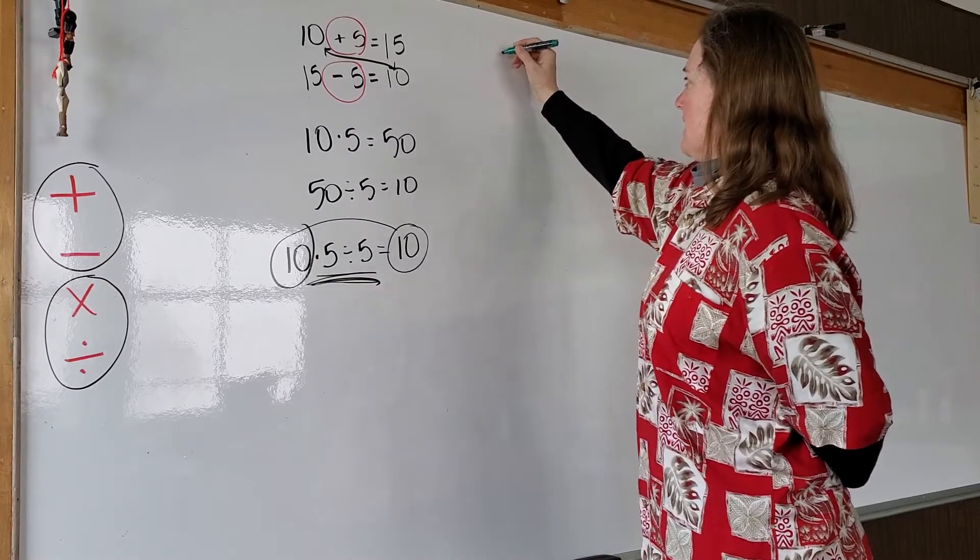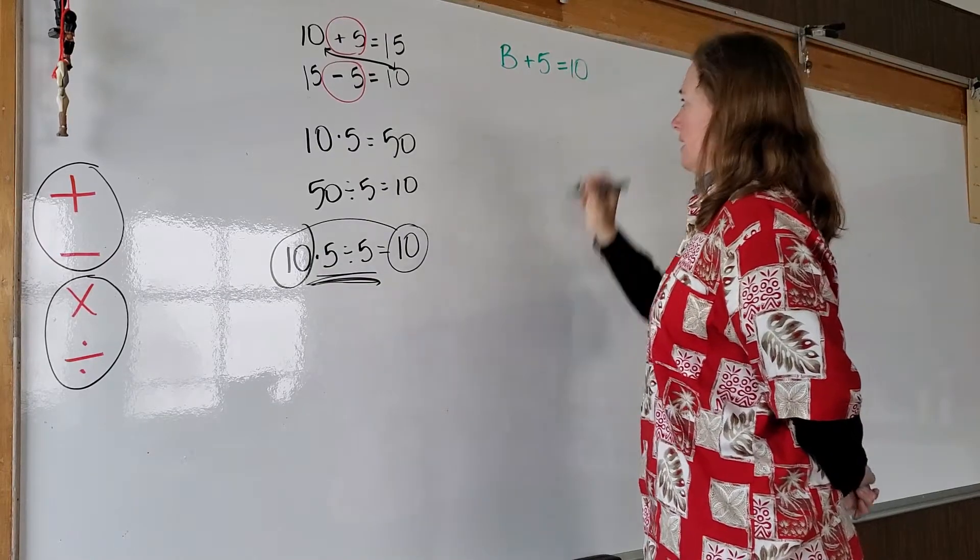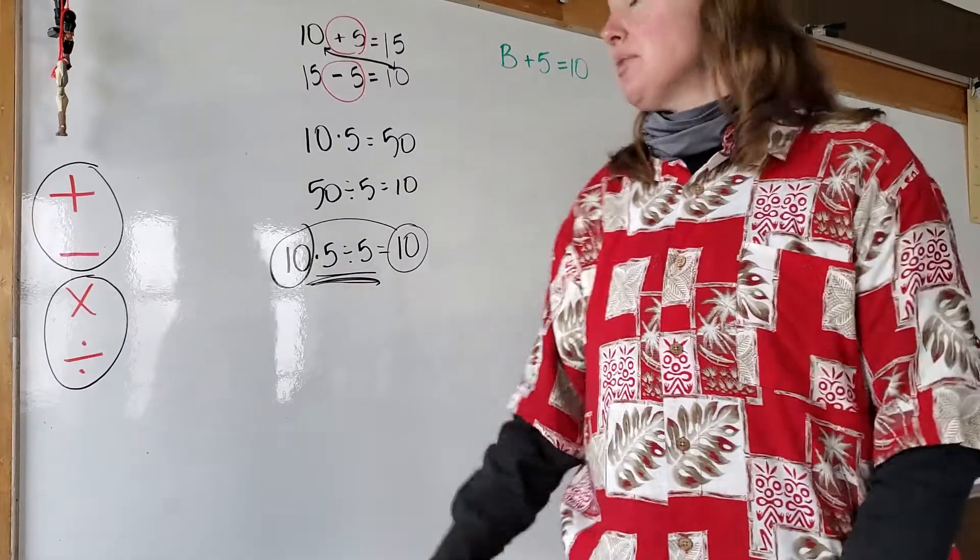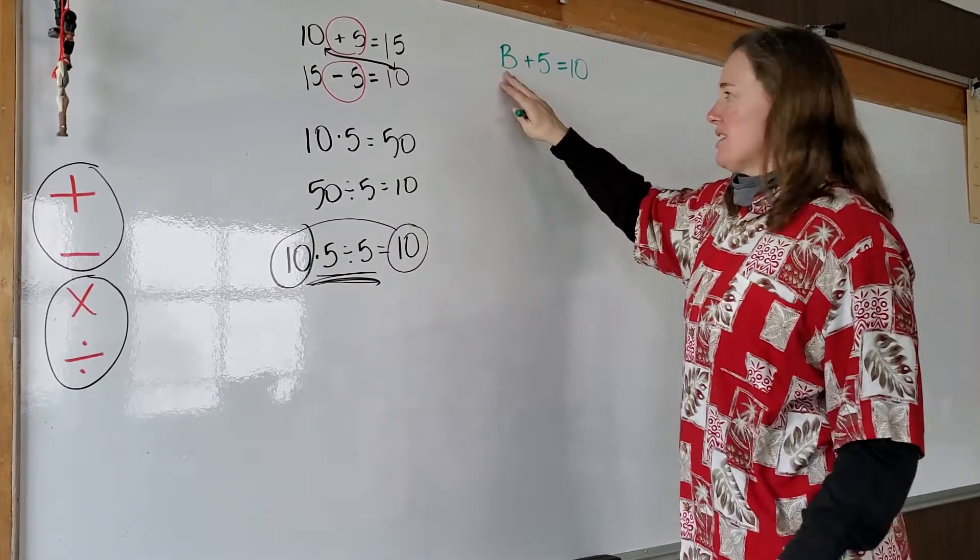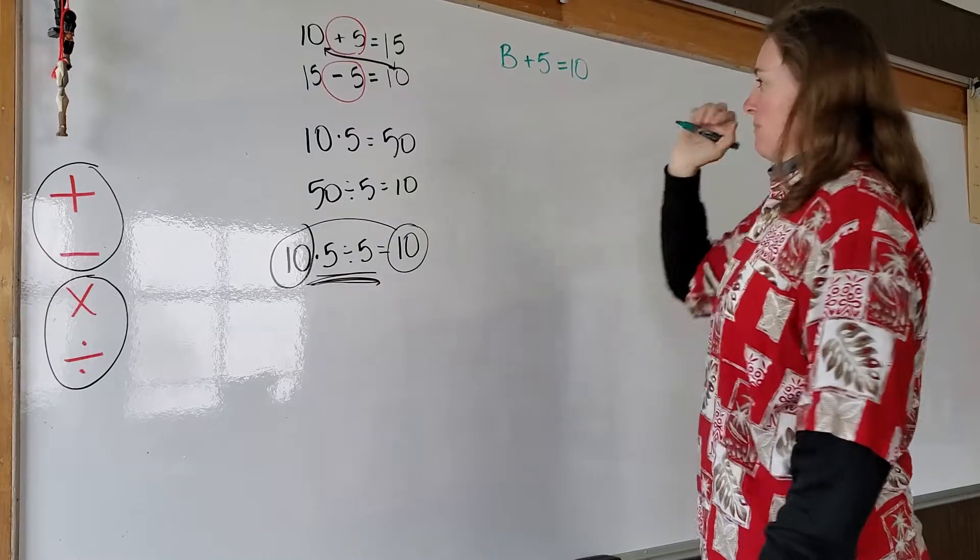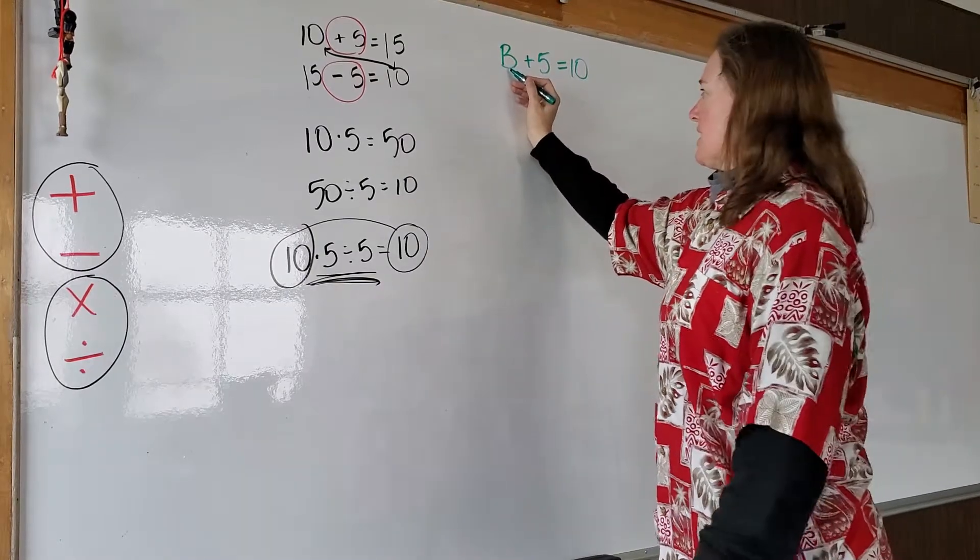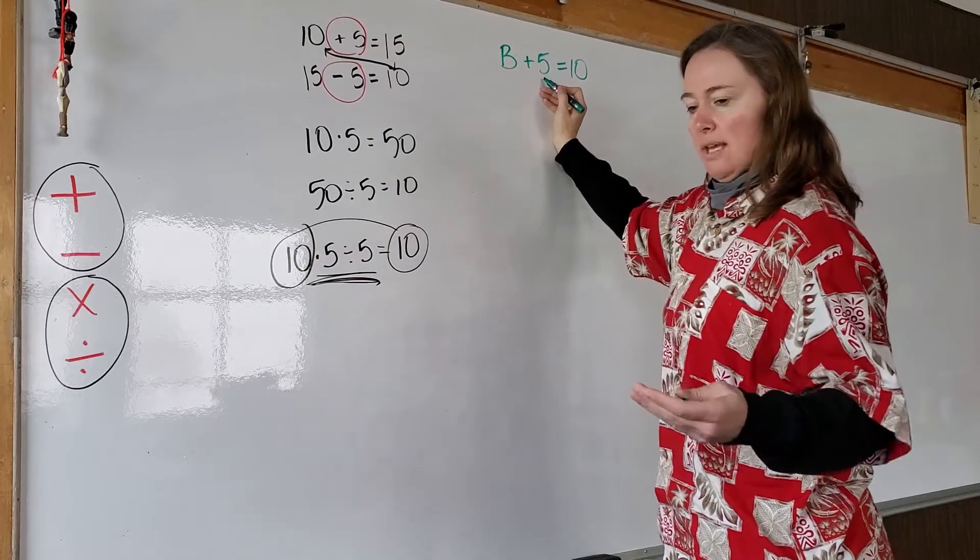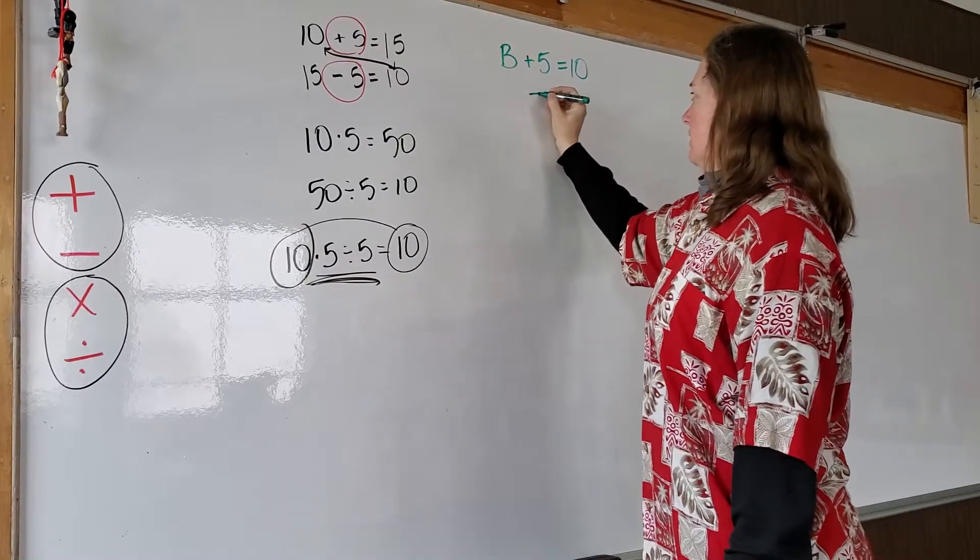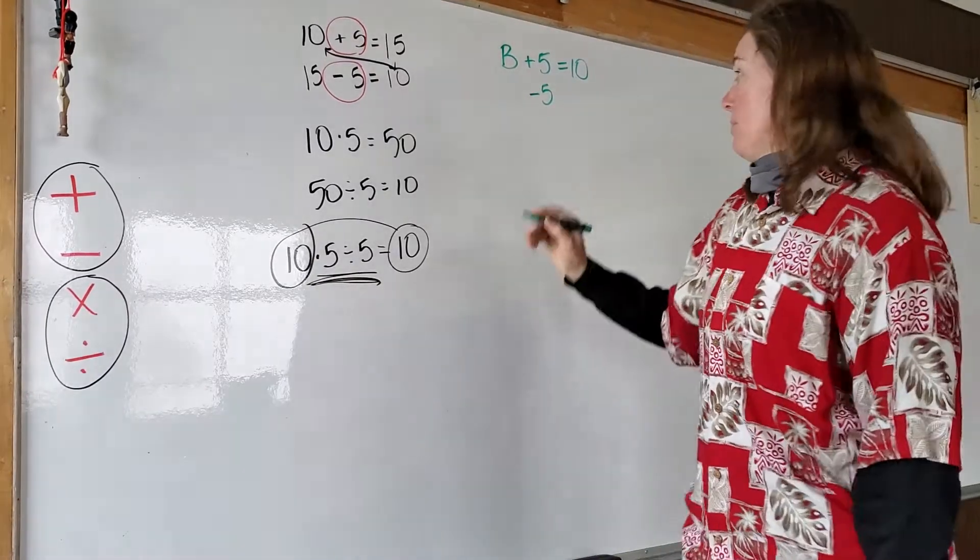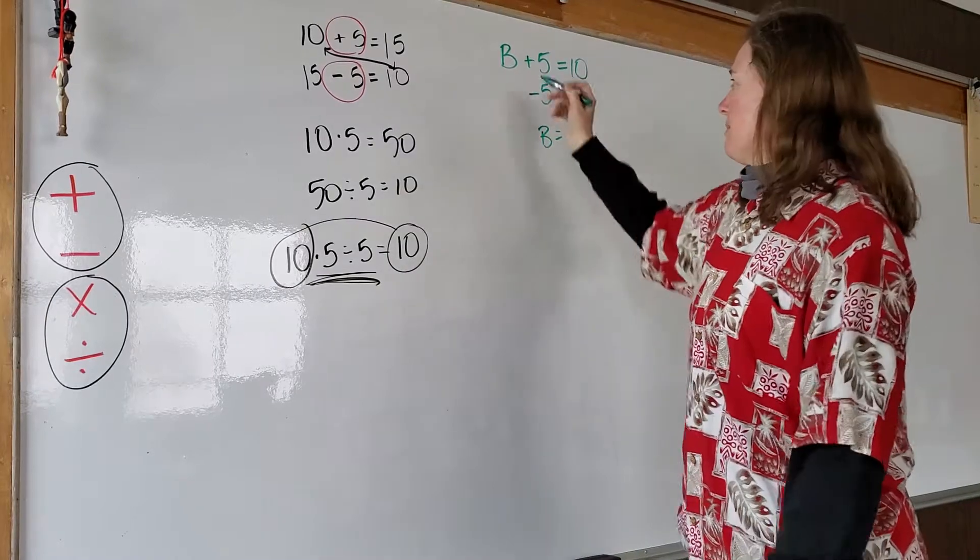So if we had, let's say, B add 5 was equal to 10. So in our head, because we're using simple numbers, we know that B is worth 5, because 5 plus 5 is 10. You've been doing that since your first, second grade. This is just the unknown thing. But if we're going to use the process of inverse operations, well, what's happening to the B? This is how I like to say it. What's happening to the B? Well, it's being added by 5. What's the inverse of that? Well, the inverse of add 5 will be subtract 5. Here's where a lot of students go wrong. They put the minus 5 here, and then they say, oh, B is equal to 10. In our minds, we know that's not right, because 10 plus 5 isn't 10.